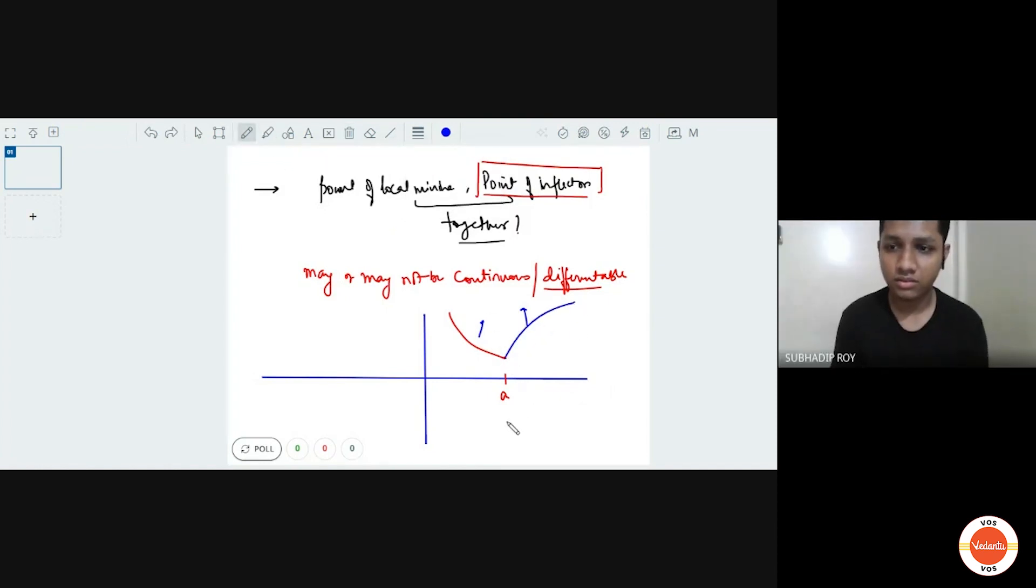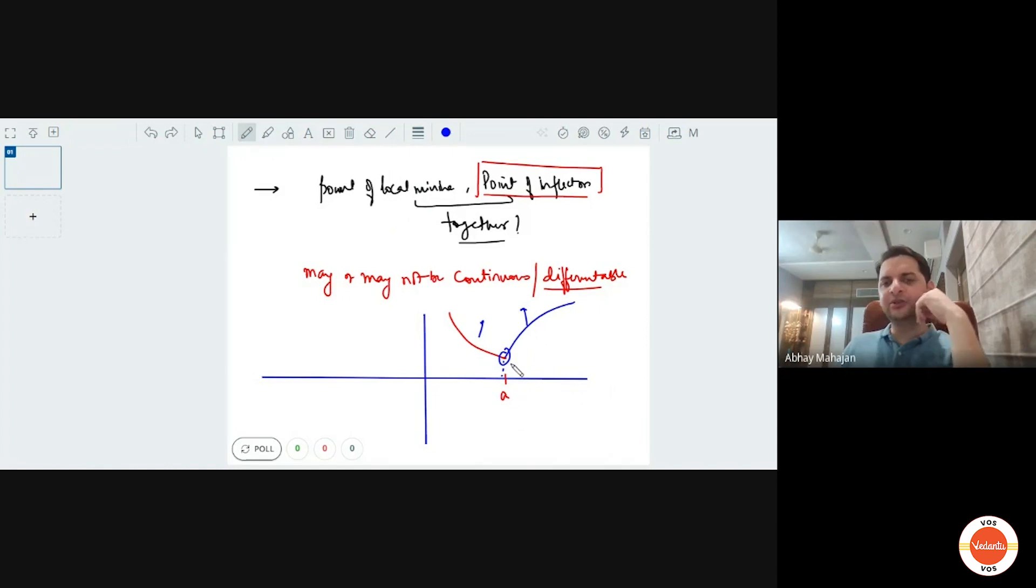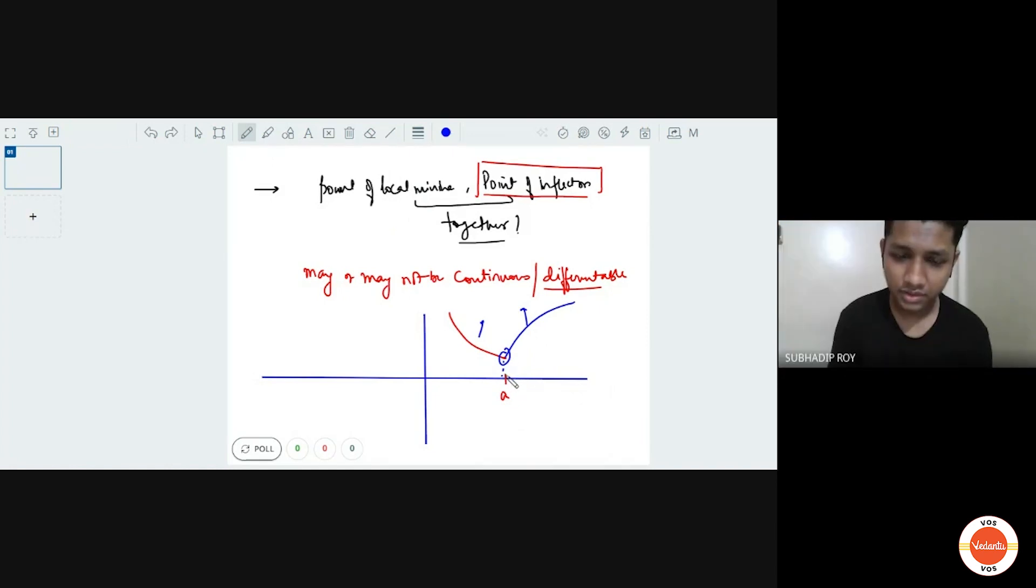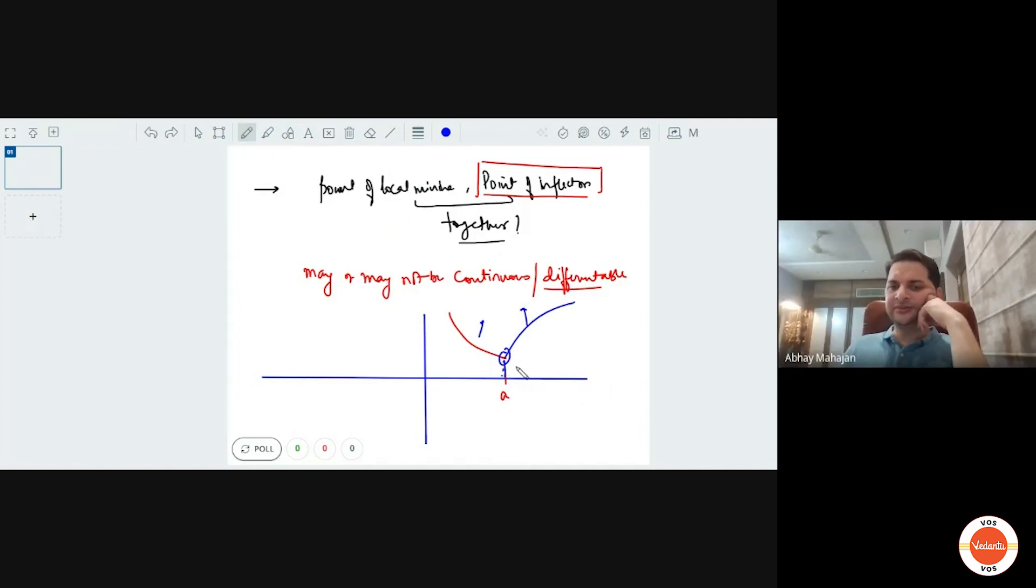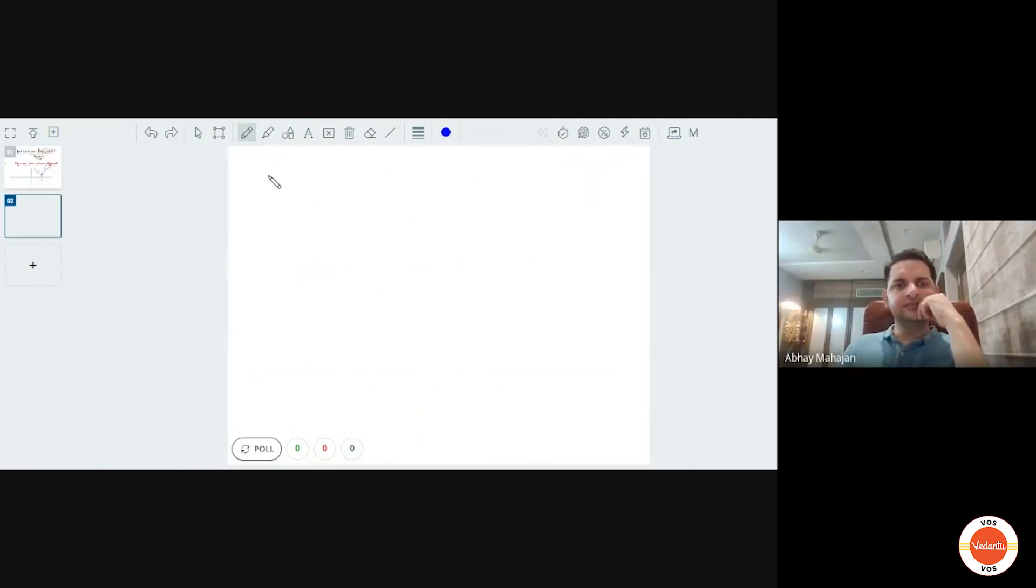So I mean this? Yes, sir. Okay. So the function is changing its concavity here. Yes, sir. So this would be a point of inflection? Yes, sir. Even if it is not differentiable? Because f dash x and f double dash x does not exist here. Yes, sir. So if f double dash is 0 or does not exist, it will be a point of inflection. Okay.